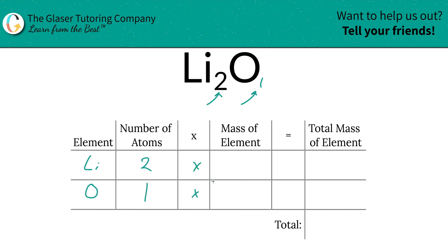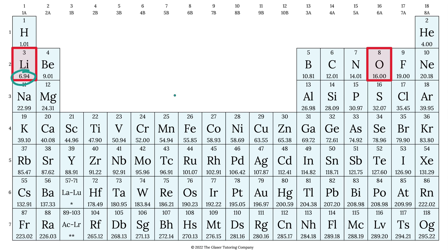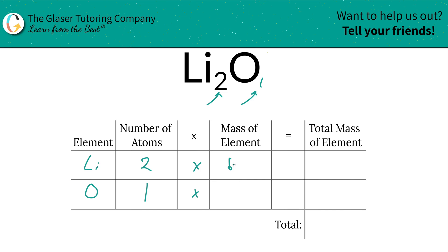Then we're going to multiply by the mass of each element. These masses are found on the periodic table. Take a look: lithium is 6.94, oxygen is 16. So that's what we're going to write down—6.94 for lithium and 16 for oxygen.